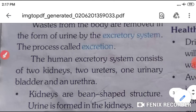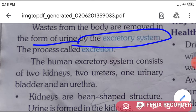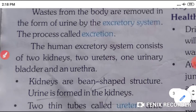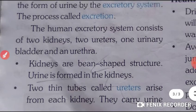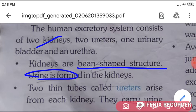The waste from our body is removed in the form of urine by the excretory system. The process of removing waste from our body is known as excretion. The human excretory system consists of kidneys — these are bean-shaped structures where urine is formed — and two ureters.